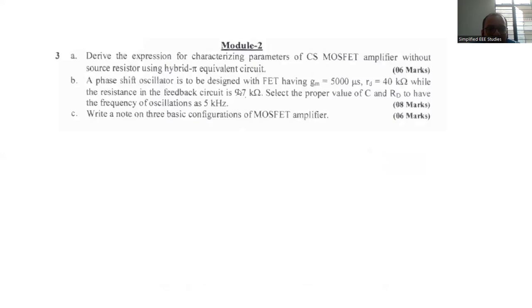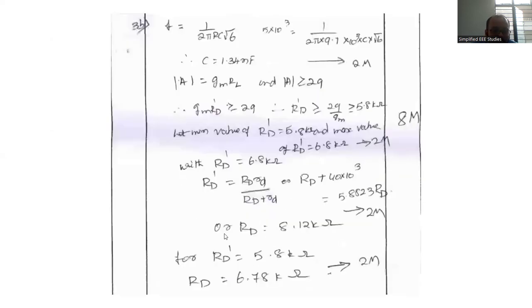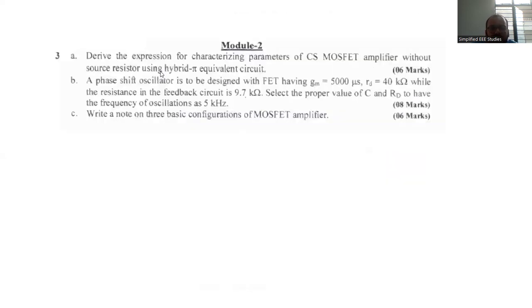Question 3B: A phase shift oscillator design with FET having GM equals 5000 microsiemens, RD equals 40 kilo ohm. Feedback circuit resistance equals 9.7 kilo ohm. Select the proper value of C and RD to have frequency of oscillation 5 kilohertz. This is a problem question. Solution is already available. Remember the formula for this oscillator: 1 by 2 pi RC into root 6. From this you compute the value of capacitance. Then later you compute the value of RD. RD dash you can compute. Ultimately RD value will be 6.78 kilo ohm. Please practice it once, definitely you can understand.